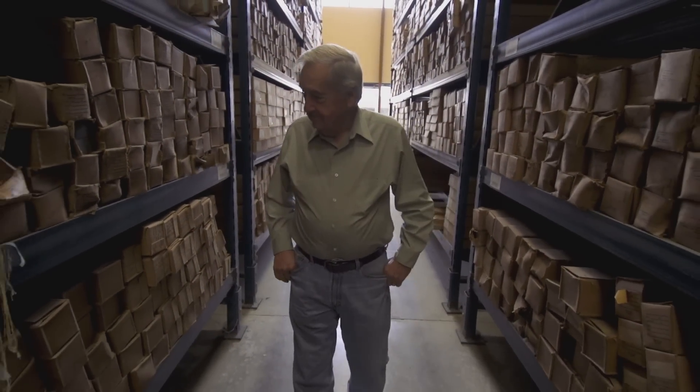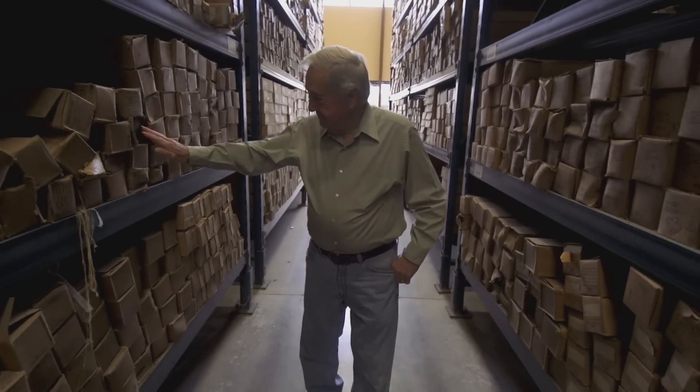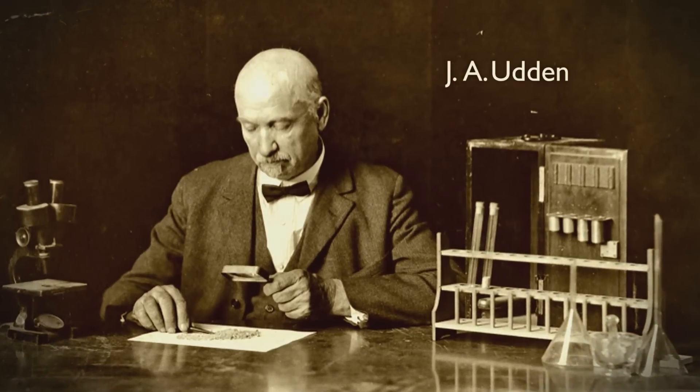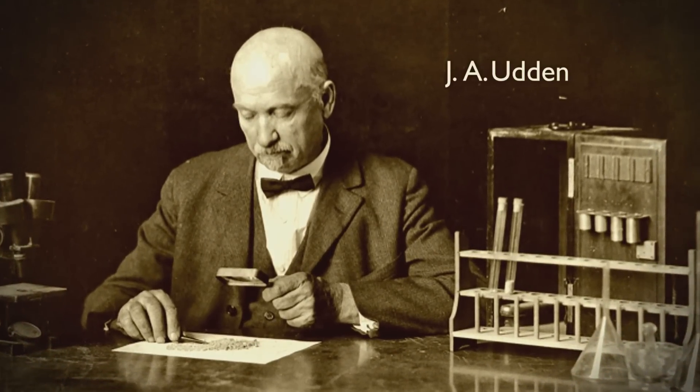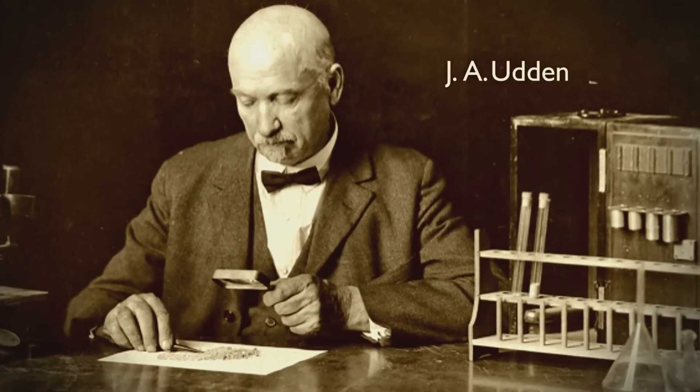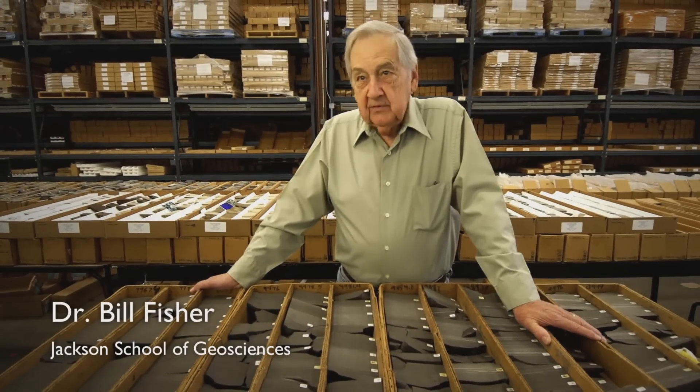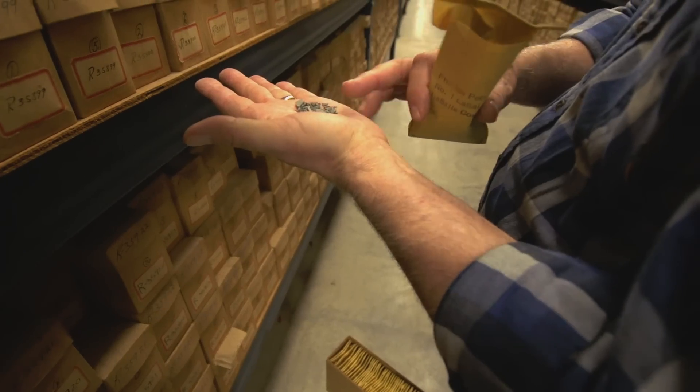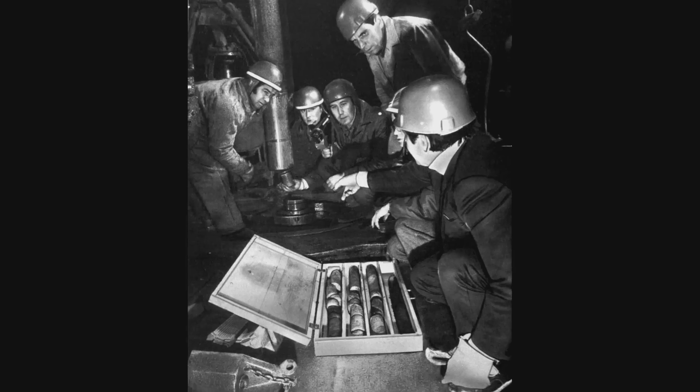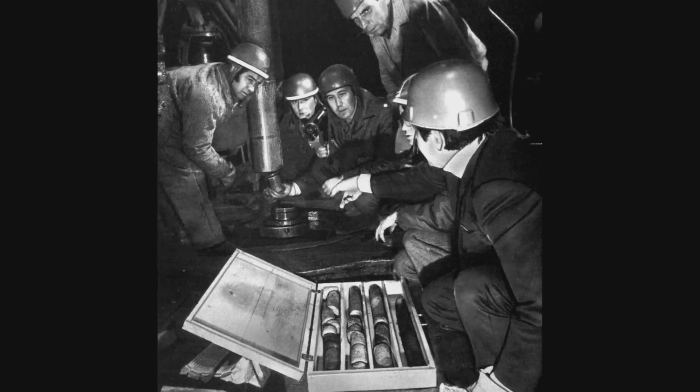The Bureau has been involved in this in a little bit more than 100 years. There was a fellow by the name of Johannes Uden. He came to the Bureau in about the early teens. We started samples first, that was the thing, then later because that was what was available. And then coring became common in about the 1920s, and so we started the collection of cores.